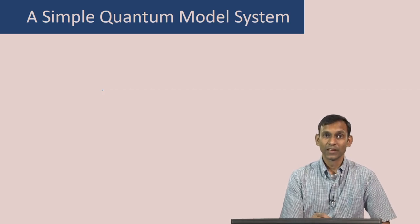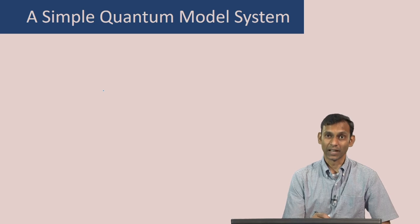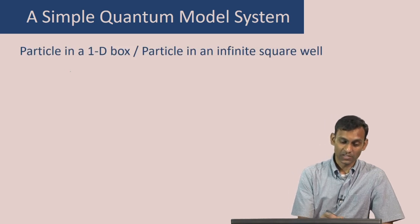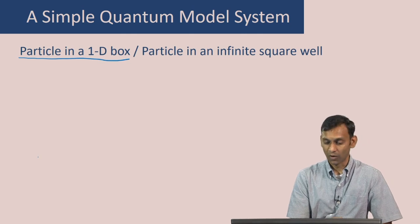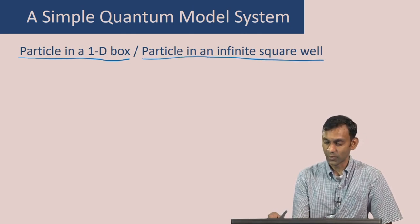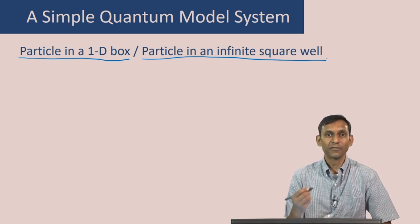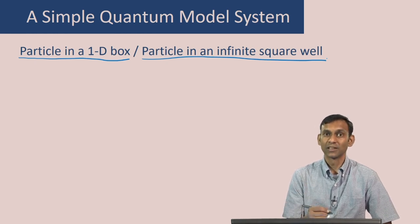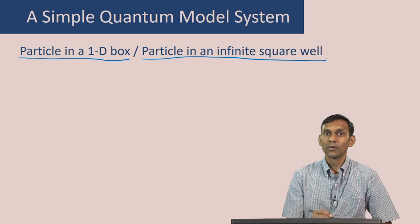In the last couple of lectures, we have looked at the postulates of quantum mechanics. Let us now look at a simple quantum model system which can help us make those ideas a little more concrete. This model system is called the particle in a 1D box system or the particle in an infinite square well. Besides being a very simple model to understand the postulates, we will see that this model is actually applicable in certain cases to explain electronic spectroscopy. We will come back to this later in the class when we discuss electronic spectroscopy.